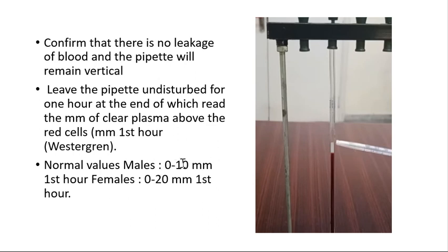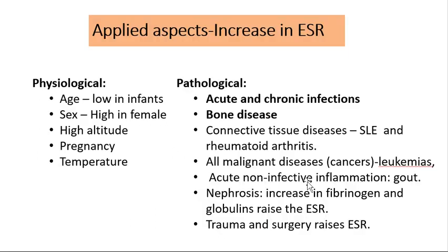Express the result — for example, 10 mm/1st hour. According to the Westergren method, normal values are 0–10 mm/1st hour for males and 0–20 mm/1st hour for females. Values are slightly higher in the Westergren method because a liquid anticoagulant is used.